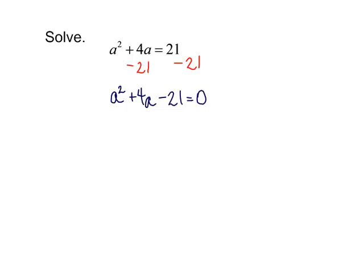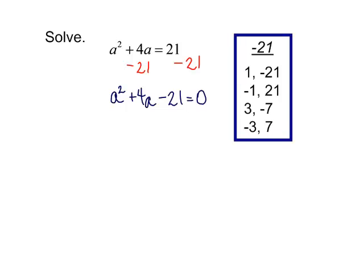And now we factor it. This a squared does just have a coefficient of 1. Here are my factors of negative 21. I'm trying to get 4. So I am going to use a negative 3 times positive 7. It is now factored.